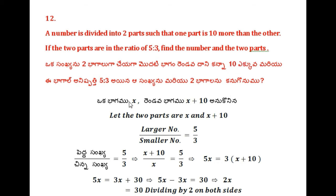Let the smallest part be taken as x. And the largest part is taken as x plus 10. Here the second part is taken as 10 more than the first part. So let the two parts are x and x plus 10.